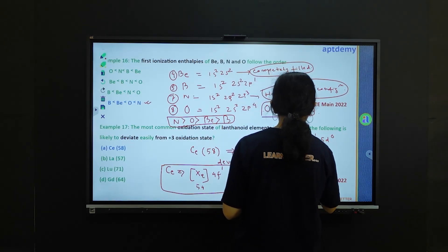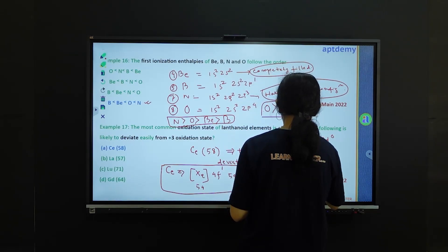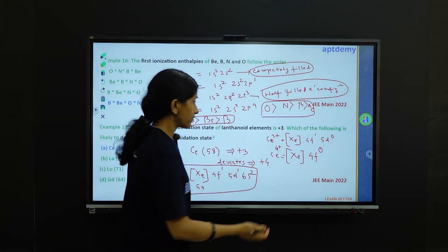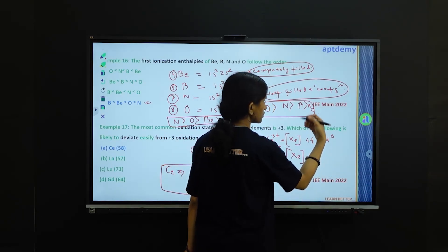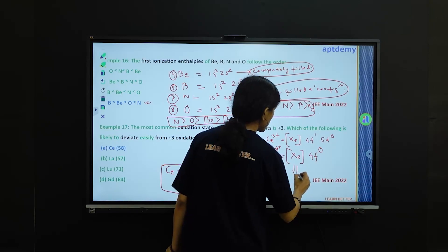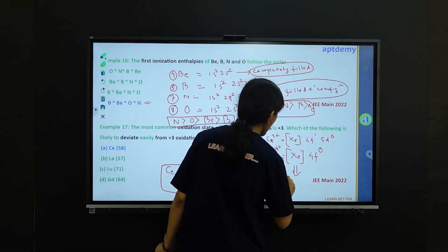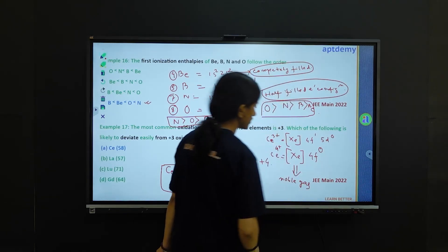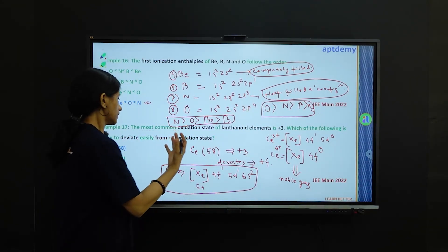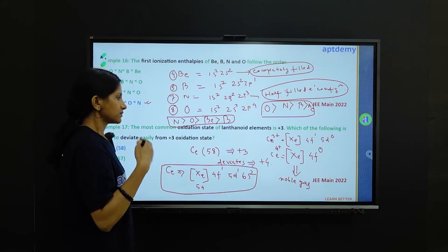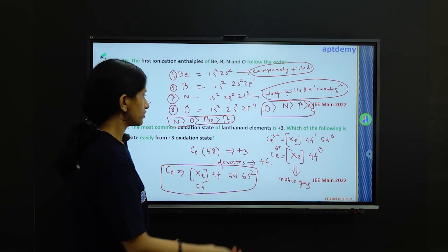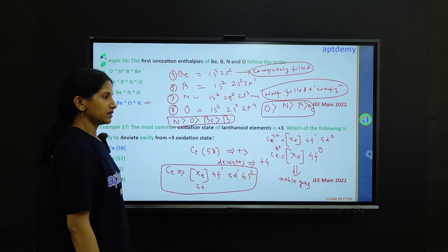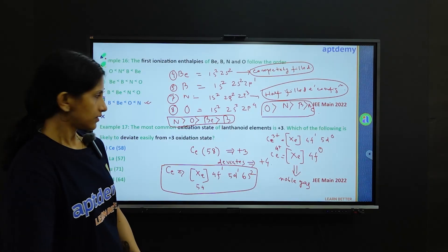Ce4 plus, what will happen to the electronic configuration? Xenon 4f0, and this is nothing but xenon itself, because the last electron is removed from 4f. So Ce3 plus will easily lose one electron to get the electronic configuration of xenon and to be Ce4 plus. So option A is the correct option.